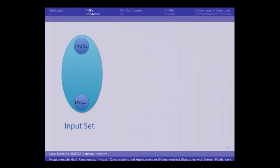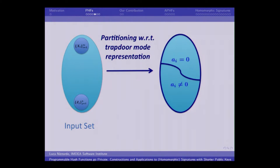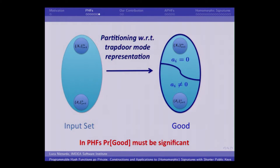If we want to clarify this concept via a picture: if we consider two disjoint sets of inputs, the trapdoor mode representation partitions the input set with respect to the presence of the factor G in the trapdoor representation. The event we are interested in is where the first set falls in one part of the partition and the other set falls in the other part. In PHFs, the probability of this good event must be significant.